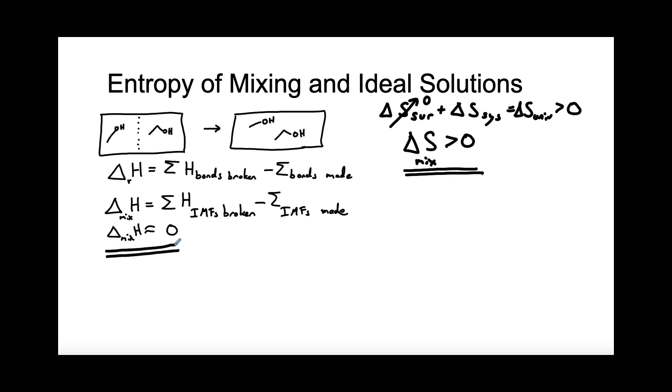Which means we can now look at the Gibbs energy for the mixing of ideal solutions. So delta G of mixing is going to be delta H of mixing minus T delta S of mixing. And we said this is going to be zero for ideal solutions, and so we see delta G mixing is just going to be minus T delta S of mixing.